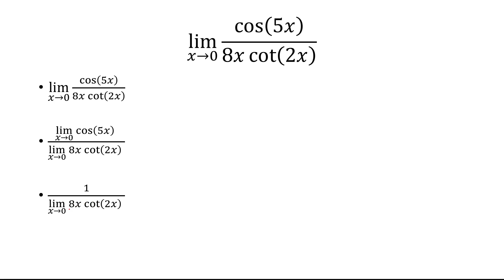And so here I'm going to factor out the 8. And then I'm going to break up cotangent as just cosine over sine. And the goal here is to get x and sine together. So we know that the limit as x approaches 0 of sine x over x is going to equal 1.